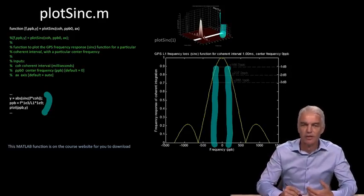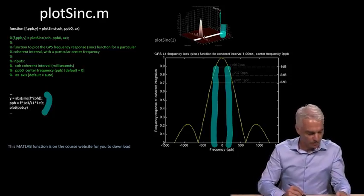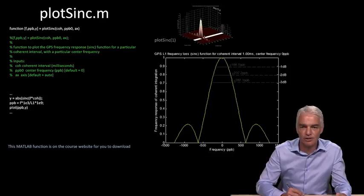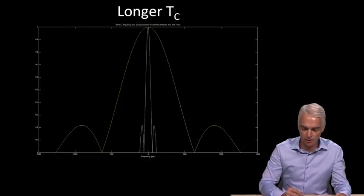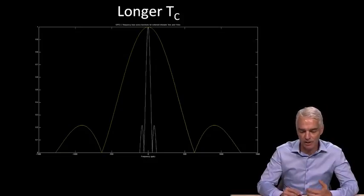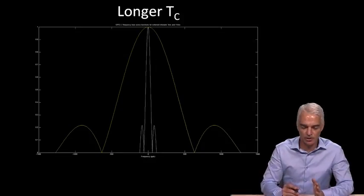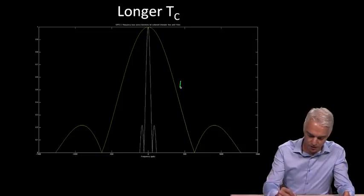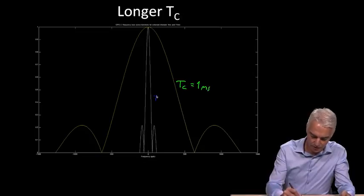When you've got this MATLAB function, then you can try different values. One of the things that you can notice right away is that the sinc function is linear with its argument frequency times coherent interval, which means that if you double the coherent interval, that sinc function just gets twice as small. I've shown two examples here.